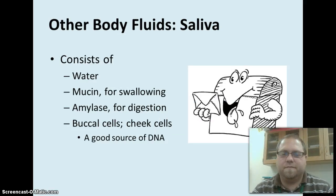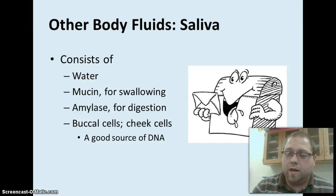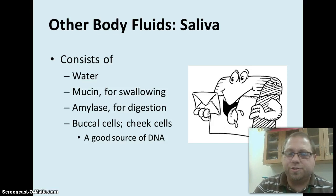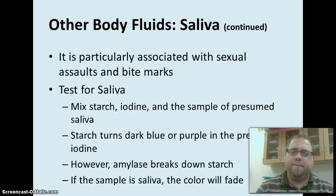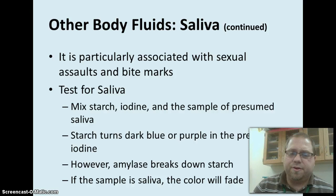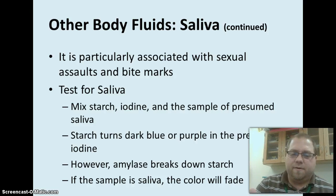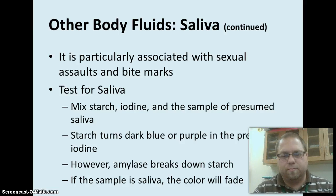Now let's talk about body fluids. Saliva — what does it consist of? Obviously, water. Then there is mucin, which is for swallowing — it's kind of the oily component of our saliva. Amylase, which is an enzyme for digestion — as soon as you put food in your mouth, it starts to digest. And then really important for forensics are buccal cells — these are cheek cells. That's why we do a lot of swabbing of cheeks, and this is a good source of DNA. Saliva is mostly associated with sexual assaults and bite marks. You can do a starch and iodine solution test — the amylase starts to break down the starch, and if it's saliva, it'll turn purple or blue and then start to fade.